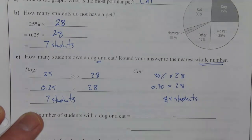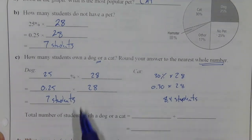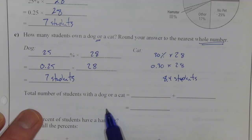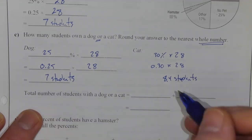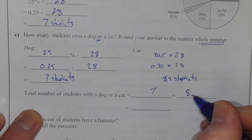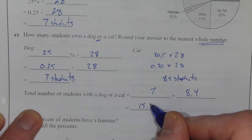Now, there's an issue with that that we'll talk about momentarily, but let's finish the problem. Total number of students with a dog or a cat means we're going to add the two together. So 7 plus 8.4 gives us a total of 15.4.